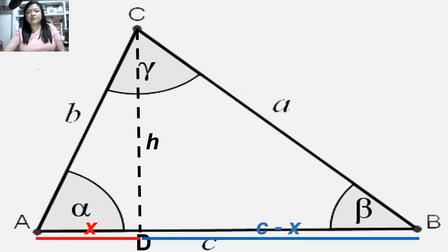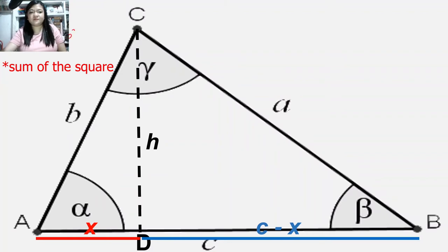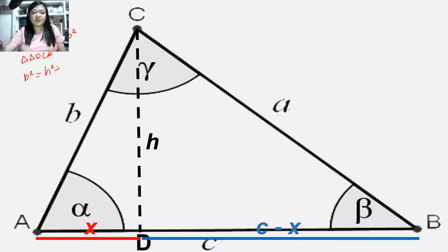The Pythagorean theorem says that the square of the hypotenuse is equal to the square of the sum of the bases. So in triangle ADC, our hypotenuse is B, our altitude is H, and our base is X. When we isolate the height, we're going to have H squared equal to B squared minus X squared.